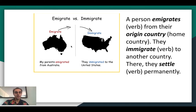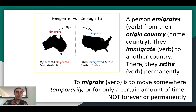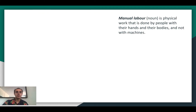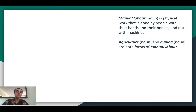And there we can settle. If you immigrate somewhere, you settle — which means you arrive there and you stay there permanently. To migrate — with no 'e' or 'i' in front — is just to move somewhere temporarily, or for only a certain amount of time, not forever or permanently. Manual labor is physical work done by people with their hands and bodies, not really with machines. Agriculture and mining are both forms of manual labor.